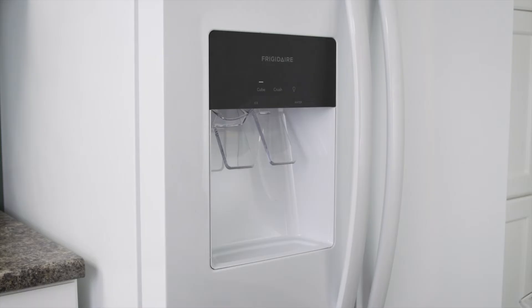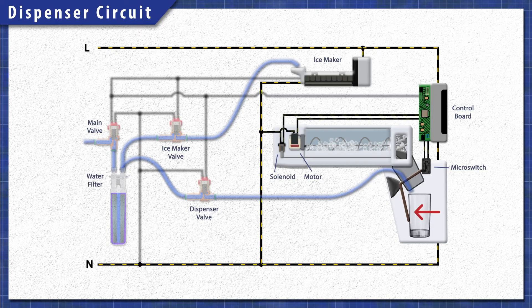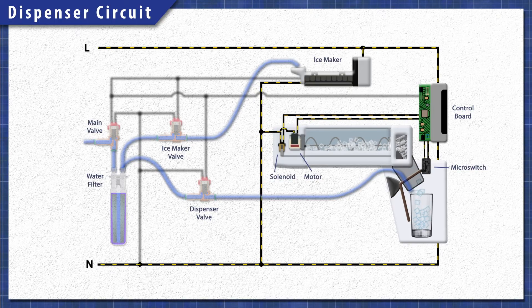Some refrigerators have an ice dispenser installed on the door. When you press the paddle, it triggers a micro switch. The auger motor pushes the ice forward and out through the dispenser.